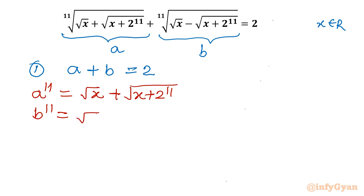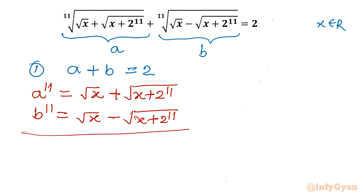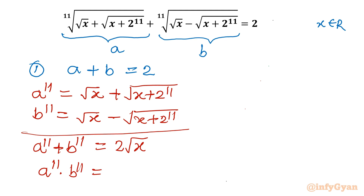b^11 would be (√x − √(x+2))^11. Let us add both equations. So a^11 + b^11 would be 2√x. Let us take the product also: a^11 times b^11. It would be (a+b)(a−b), which is a² − b². So I will write (√x)² − (√(x+2))^11 whole squared.